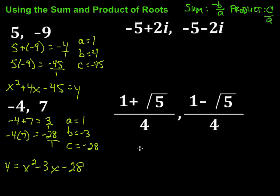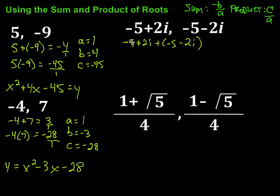Let's take a look at one that involves imaginary numbers. I'll find the sum first: negative 5 plus 2i, plus negative 5 minus 2i. When we add and combine like terms, the two negative 5s give us negative 10, and the 2i minus 2i cancels out, leaving us with just negative 10.